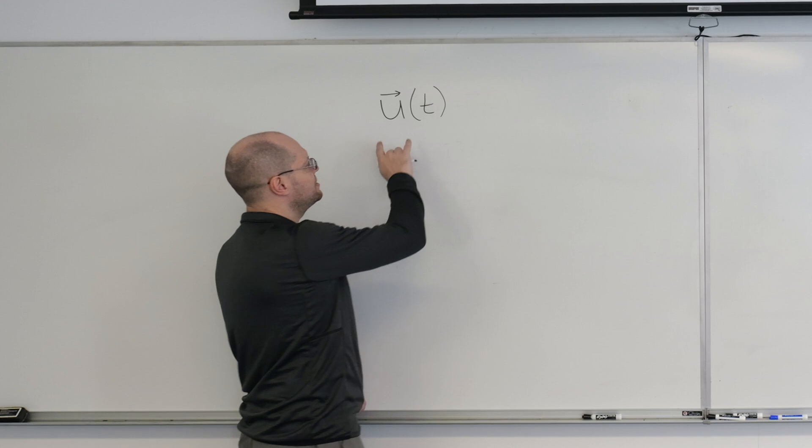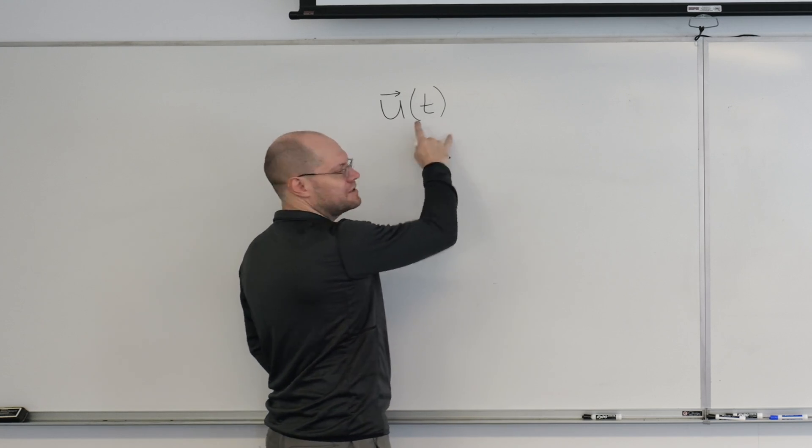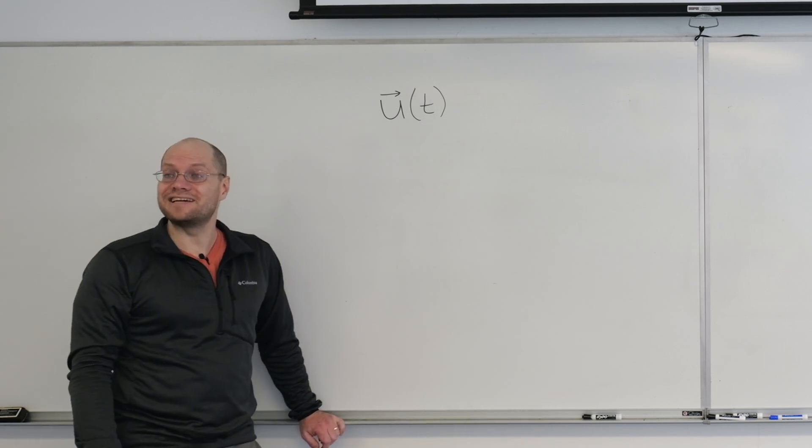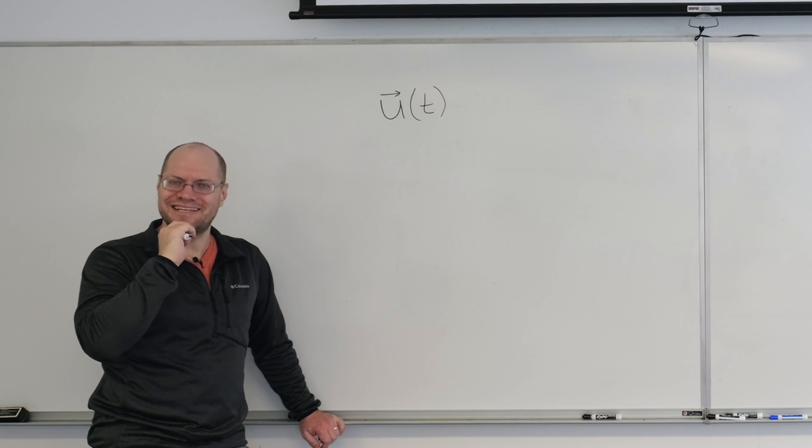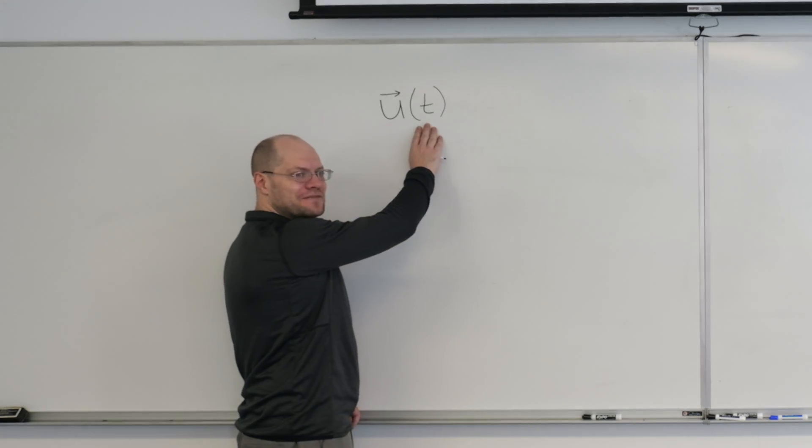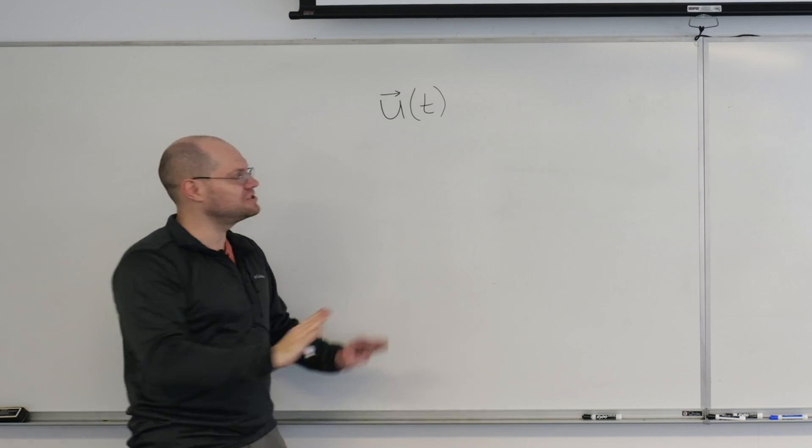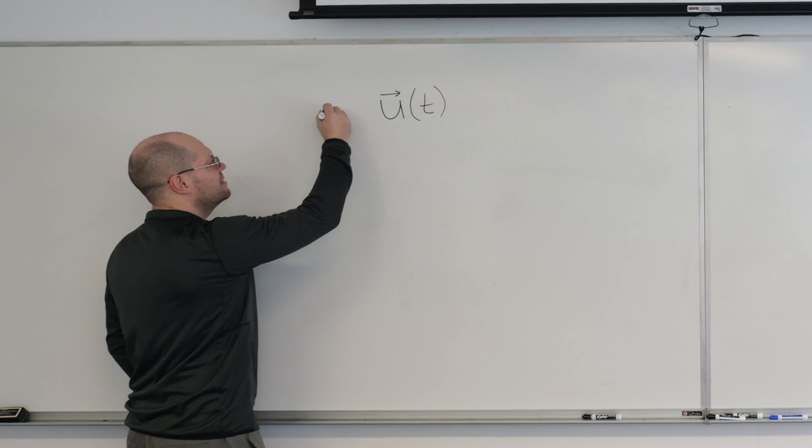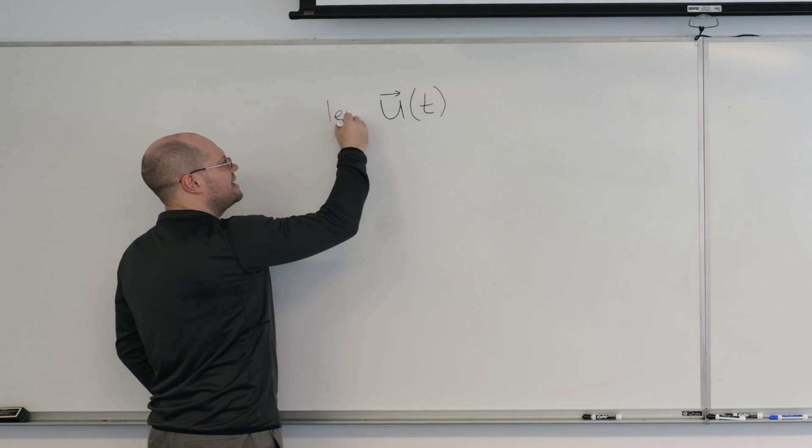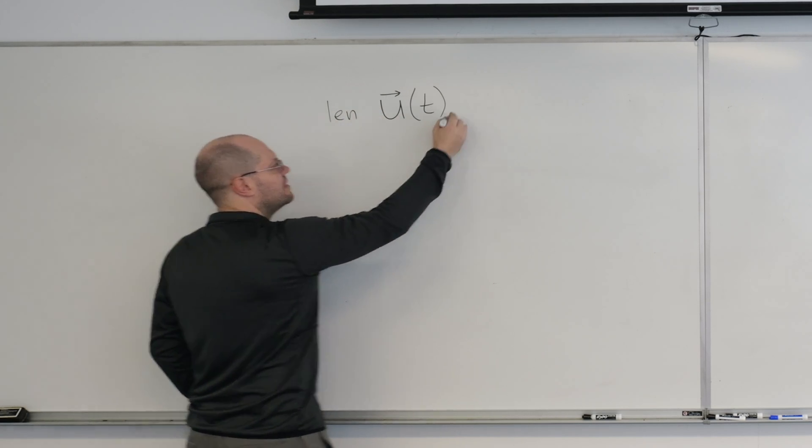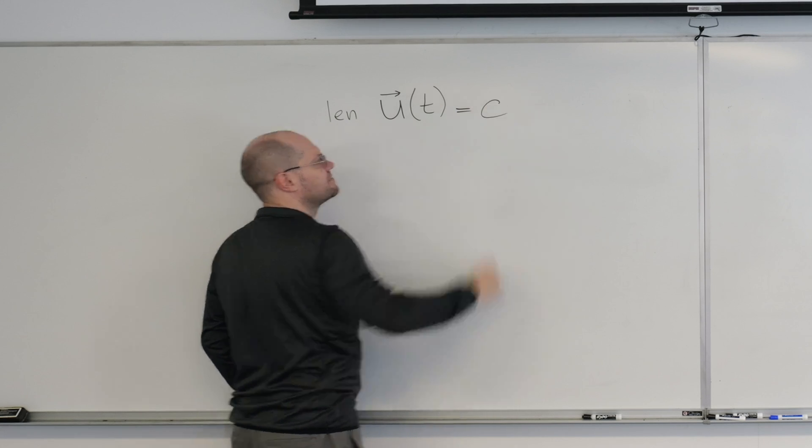Remember how last time we said that any vector-valued function can be thought of as a curve. So any vector-valued function can be thought of as a curve, but don't do it yet. Let's just work with this statement algebraically. So here is what we're given. Length of u is a constant.